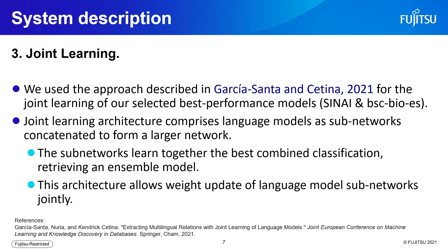Now, our joint learning approach. We use the approach described in Garcia-Santa and Cetina 2021 for the joint learning of our selected best-performing models, CINAI and BSC-BIOS. This joint learning architecture comprises language models as subnetworks concatenated to form a larger network, and the subnetworks learn together the best combined classification, retrieving an ensemble model. This architecture allows weight updates of language model subnetworks jointly.